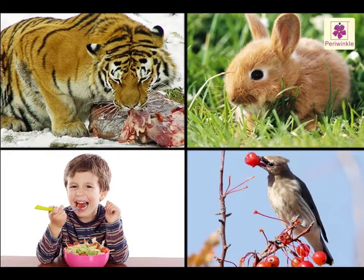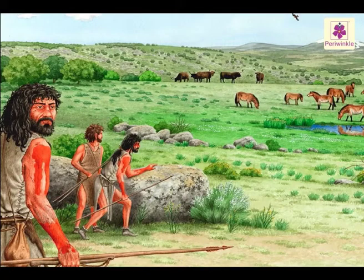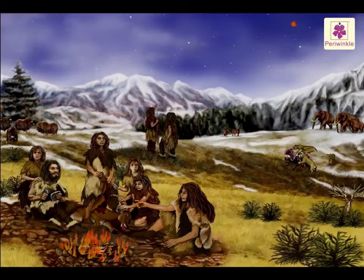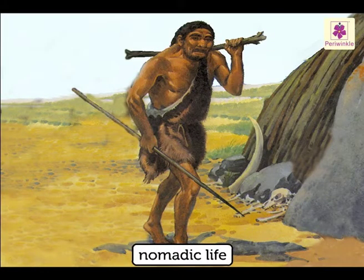All living things depend on the environment for food. Early man found food from his surroundings. When food became scarce in the place where he lived, he moved to another place in search of food. He led a nomadic life.